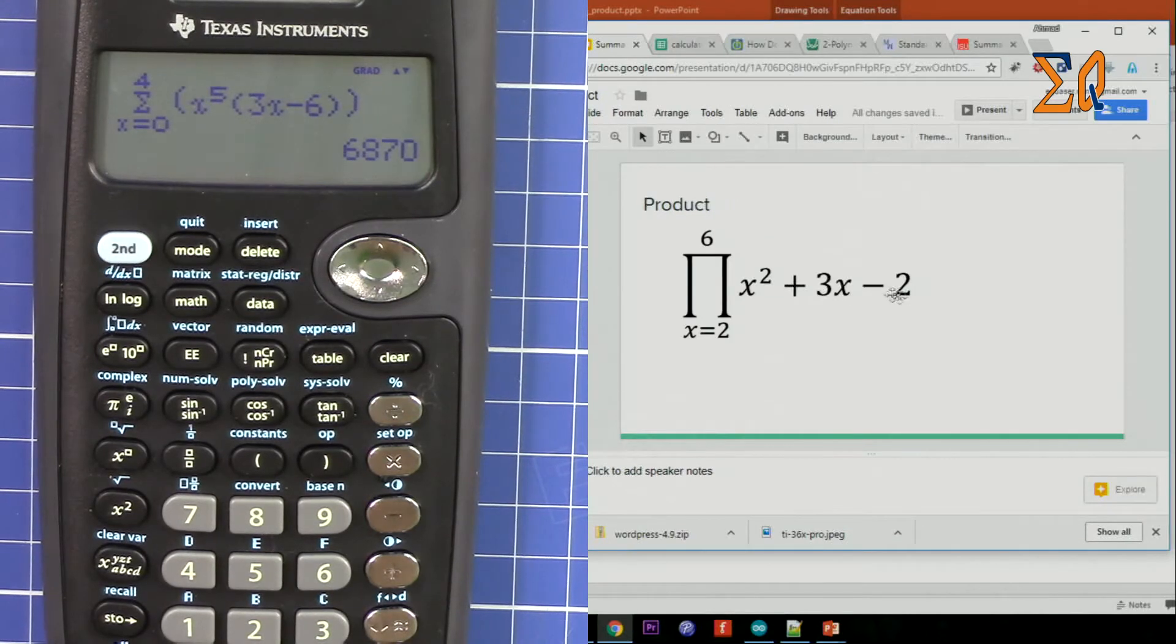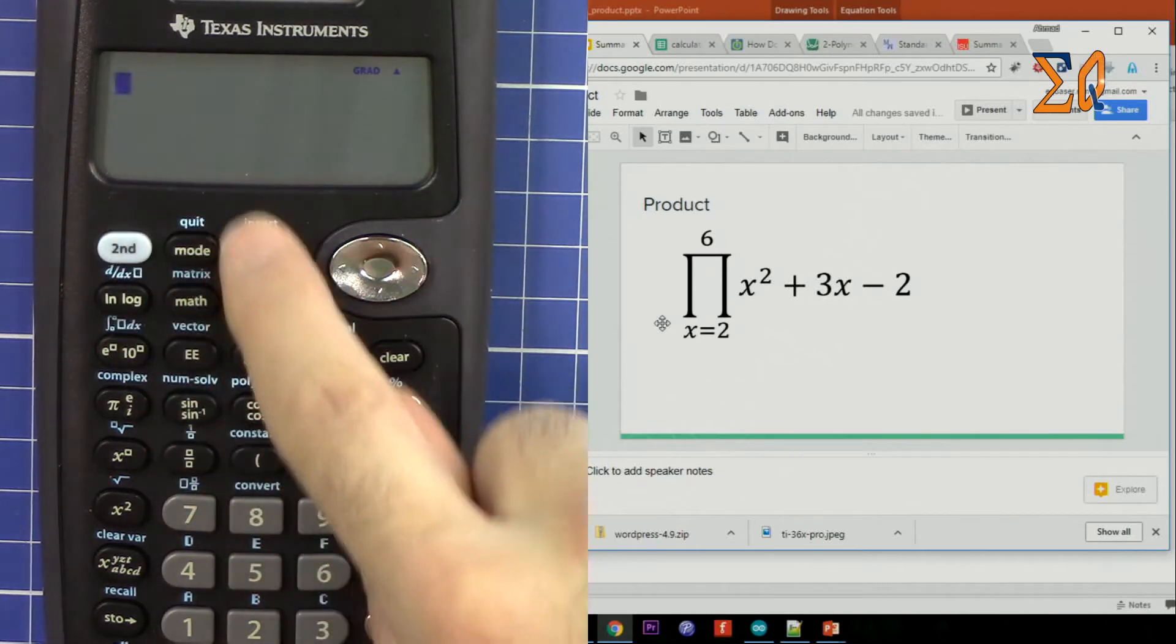Now let's do the product. The product is such that x will be replaced by 2 first, all of this will be evaluated and then multiplied by x to the 3 and x to the 4, 5, and 6. So all the values will be multiplied, whereas in summation they will be just added. So clear, now Math, and then go down, prod number 6.